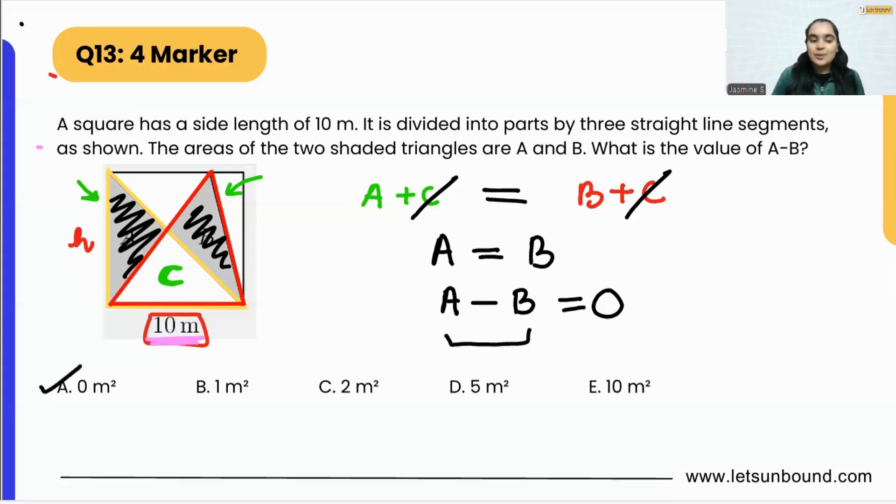So we got the answer—option A is going to be the correct answer. What we did here is we assumed there is a third part with area C, split it, and assumed two triangles with area A plus C and B plus C. We know they both lie on the same base of 10 meters and the height is also 10 meters, so the area of both triangles is the same. We equated it, canceled out C, and got A equals B, or A minus B equals zero.